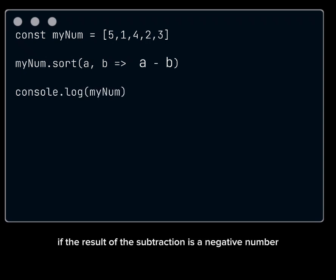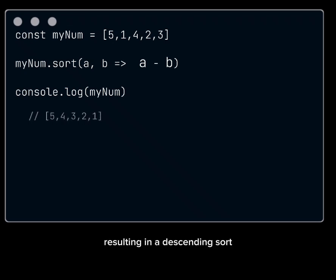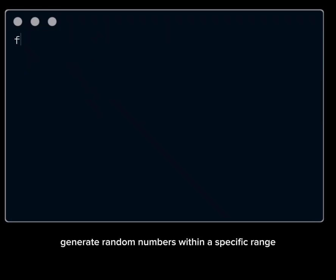If the result of the subtraction is a negative number, then a will be sorted before b, resulting in a descending sort. Just switch a and b if you want to get an ascending sort.